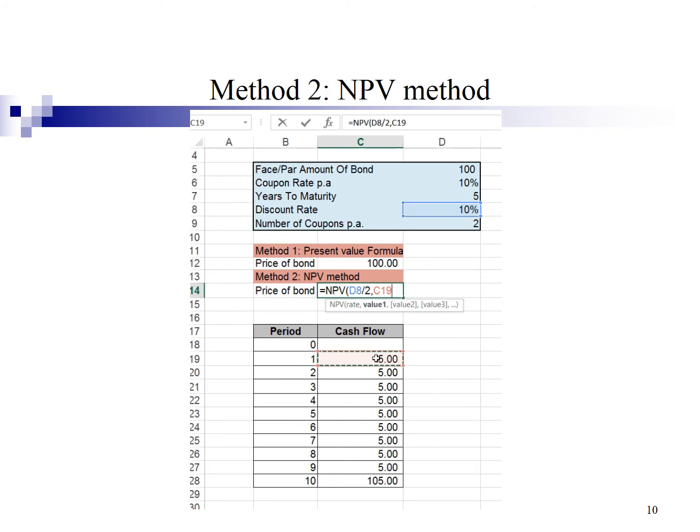Then highlight the cash flow from the first period until the 10th period. Close bracket, enter, and you have the bond price of 100. The answer for method 1 and method 2 are the same.